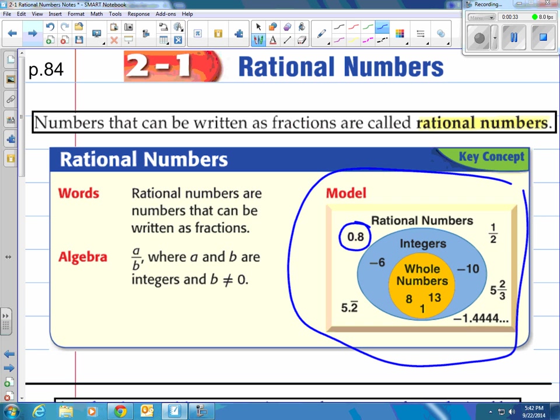How do you write 0.8 as a fraction? Well, that's 8 tenths. See, I can write it as a fraction, therefore it's a rational number. How about 5.2 repeating? That's 5 and 2 ninths. That's actually 47 over 9. That is the fraction. This is actually a mixed number, so that's not a fraction. This is a fraction right here, 47 over 9.